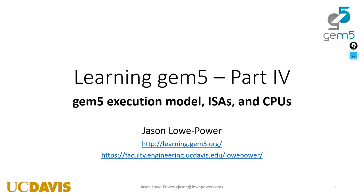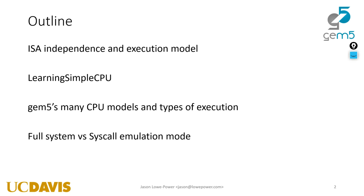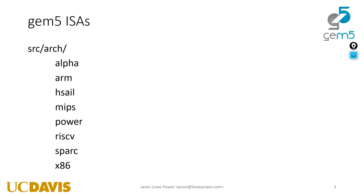This is the first time I'm presenting this section, which isn't written yet in the book. I'm going to talk about how the different ISAs work in gem5, then go through the code of a learning simple CPU implementation — about the simplest CPU you can implement. Then I'll discuss the different CPU models in gem5 and talk a bit about full system versus syscall emulation mode.